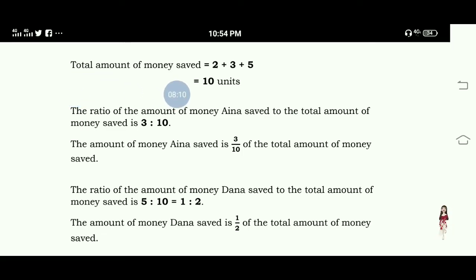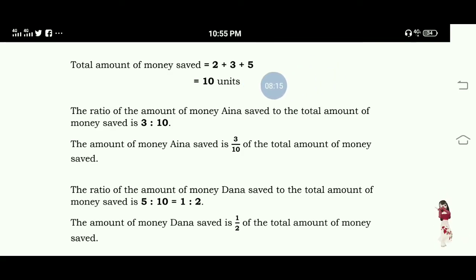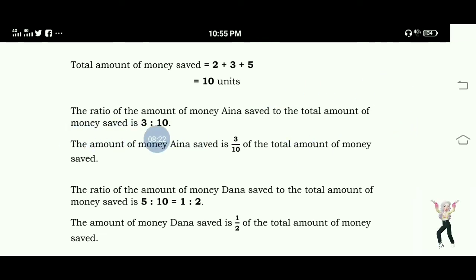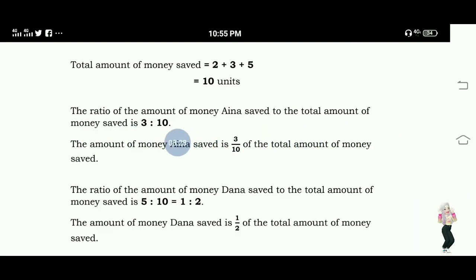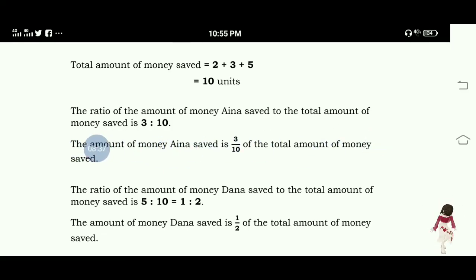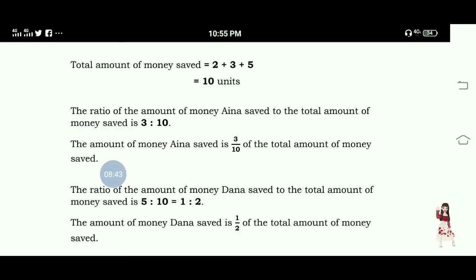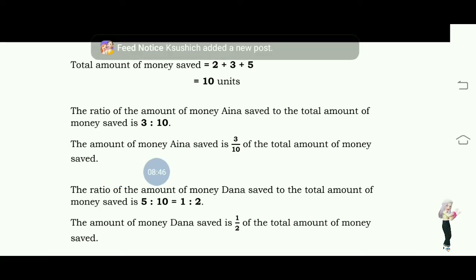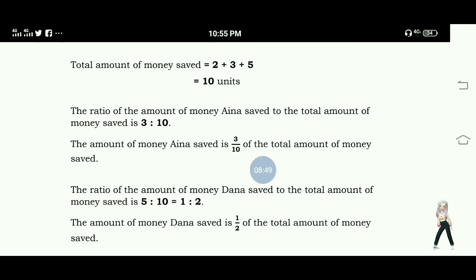The total money saved: we add the money saved by the three kids — two plus three plus five equals ten units. The ratio of the amount of money Ina saved to the total amount of money saved is three is to ten. The amount of money Ina saved is three-tenths, or three over ten, of the total amount of money saved.